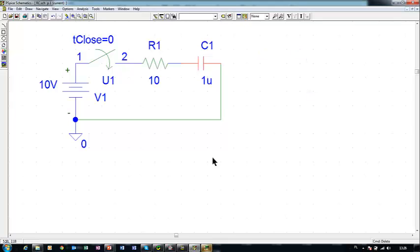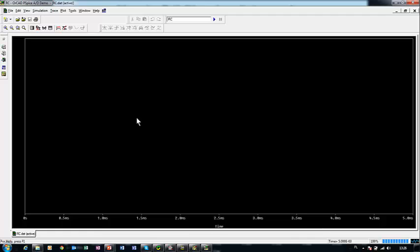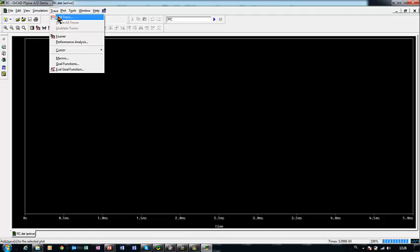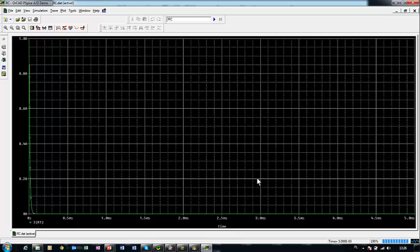So we have a simulation and a result is here. We may add trace. Our trace, add trace is current. That mesh current. So this is the result. So that way I have shown you how to operate PSPICE when we are using a schematics version.